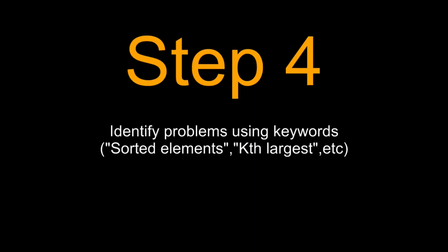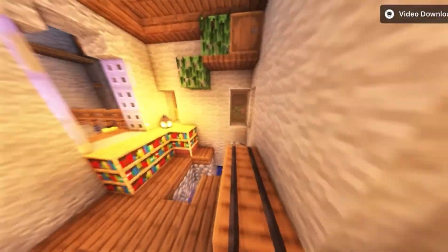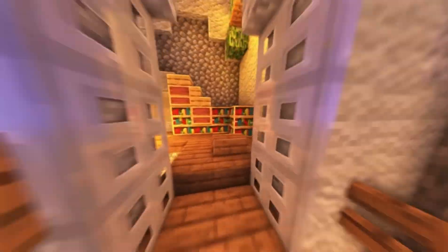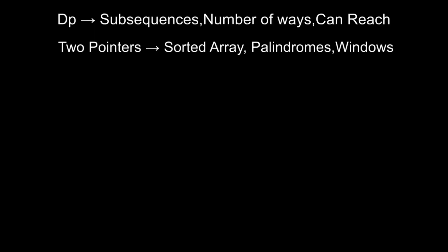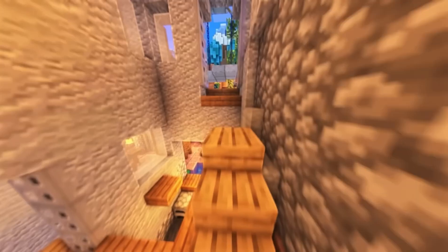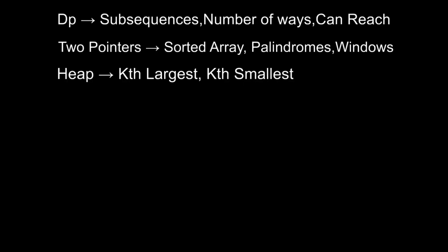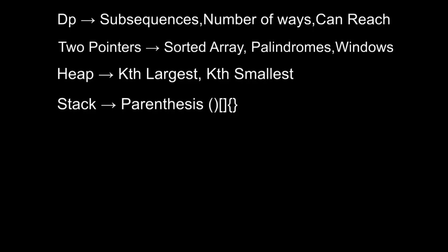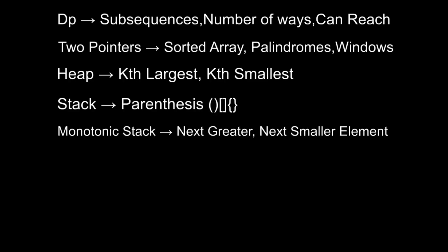By now you have already got a strong idea of what kind of problem this is, but the final filter is keywords. The problem description is full of them if you know what to look for. Phrases like 'number of ways,' 'longest subsequence,' or 'shortest path' scream dynamic programming. Words like 'palindrome' or 'sorted array' often point straight to two pointers. If you see 'k largest' or 'k smallest,' start thinking about heaps. If there are parentheses, it directly means stack.